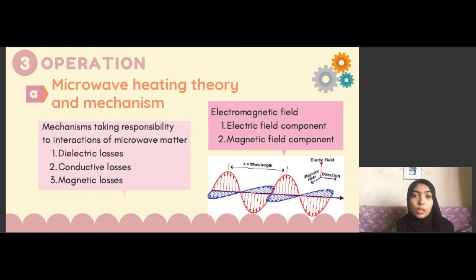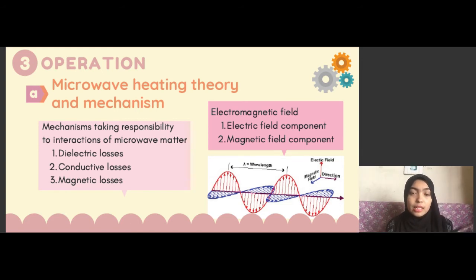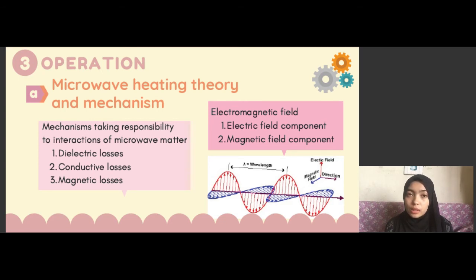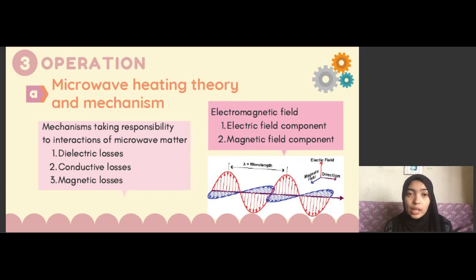The different components interact with material according to different mechanisms. This is the electromagnetic wave that occurs inside the microwave oven. According to Maxwell's equations, a time-varying electric field produces a time-varying magnetic field, and conversely, a time-varying magnetic field produces a time-varying electric field. In a uniform plane wave, both electric and magnetic components are orthogonal or transverse and oscillate at right angles to each other and to the direction of propagation.